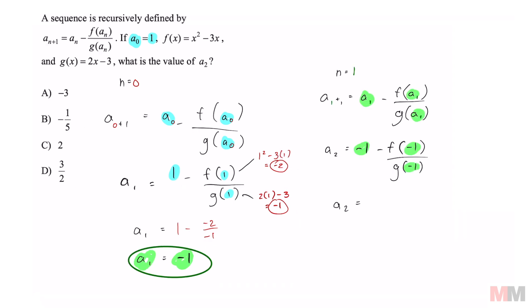All right, let's simplify this. That's going to equal negative 1. And we are plugging negative 1 as our input now in the same functions. Negative 1 squared minus 3 times negative 1. That is going to equal 4. And in the denominator, that's going to be 2 times negative 1 minus 3. That equals negative 5. So now we got negative 1 minus 4 over negative 5.